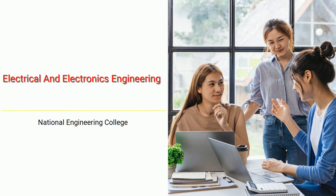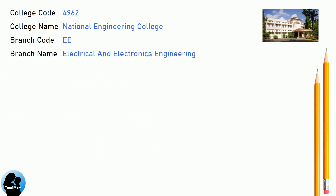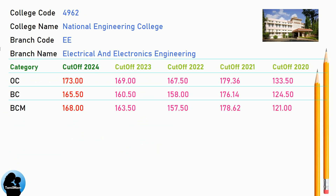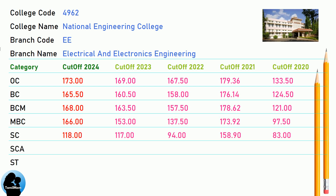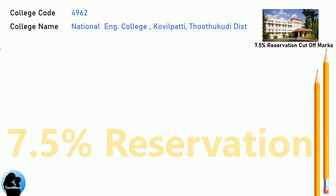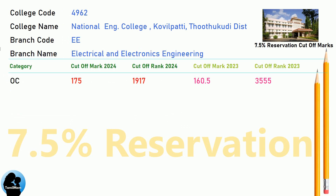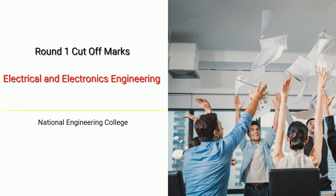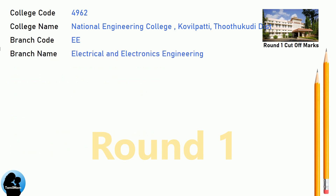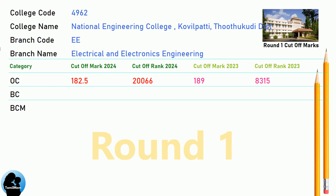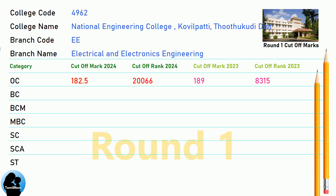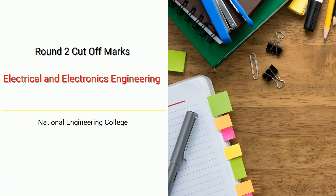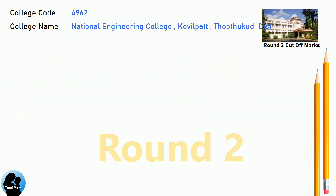DNA cut-off for National Engineering College in Electrical and Electronics Engineering. DNA 7.5 Reservation cut-off for National Engineering College in Electrical and Electronics Engineering. DNA Round 1 cut-off for National Engineering College in Electrical and Electronics Engineering. DNA Round 2 cut-off for National Engineering College in Electrical and Electronics Engineering.